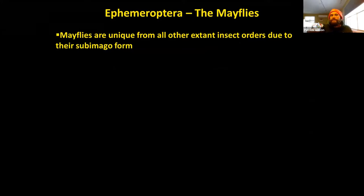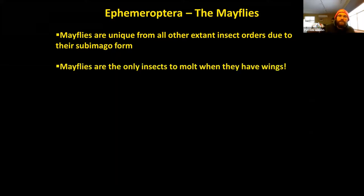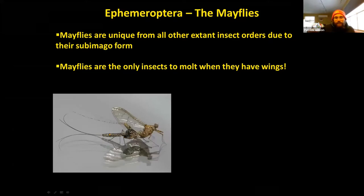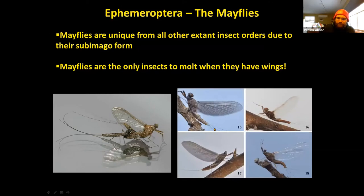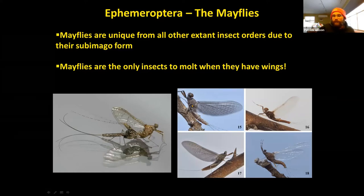Mayflies are unique from all other extant insect orders due to their sub-imago form. They are the only insects to molt when they still have wings present. The sub-imago typically has a darker wing coloration. After landing and molting again, the adult stage emerges with lighter-colored wings and sometimes even longer front legs in males. No other insects alive today do this besides mayflies.